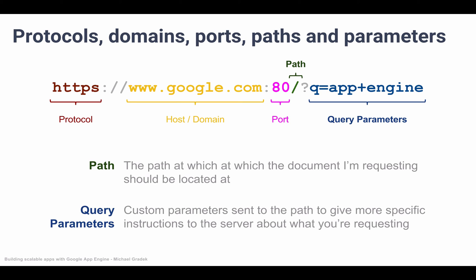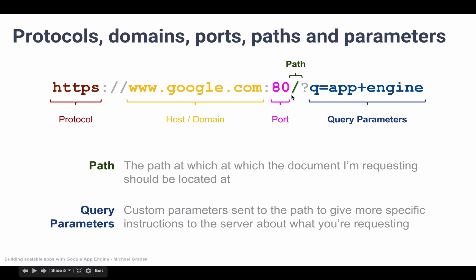And then finally, query parameters. This last bit basically means we're sending some custom parameters to the server to give it more specific indications on what we're looking for. Taking the previous example of a blog, imagine the path would be forward slash posts, and then we appended a query parameter of ID equals 123. So essentially what we would be saying is we're requesting some posts with ID 123 — can you please serve it to me? This is how query parameters work: they just send more specific instructions to our server so that it knows what we're actually looking for, and they can customize the response accordingly.